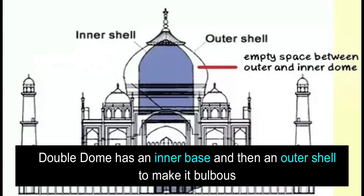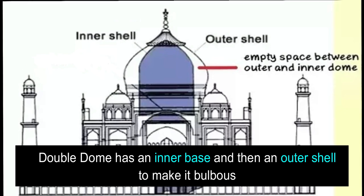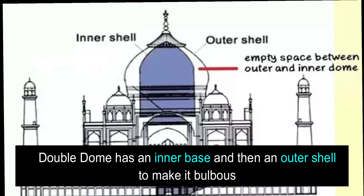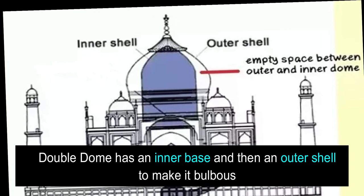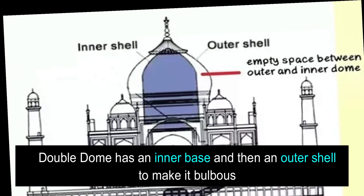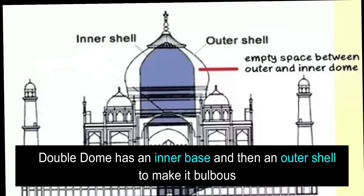These double domes of the Mughal structure were made with an inner base, and then an outer shell was made above that to create a huge dome.